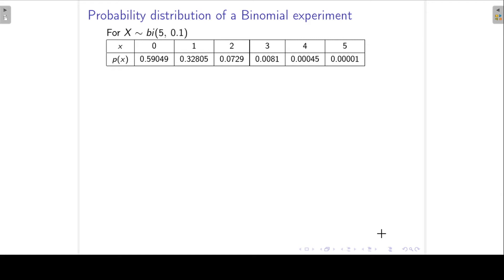We have been looking at the binomial distribution, and we looked at a specific example where our random variable x follows the binomial distribution with n, the number of trials, equal to 5, and p, our success probability, equal to 0.1.